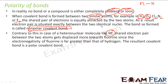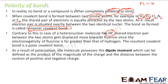But in something like HF, Fluorine will attract the electrons far more. So in that case, Fluorine will get a partial negative charge and Hydrogen will get a partial positive charge. This is called a polar covalent bond.